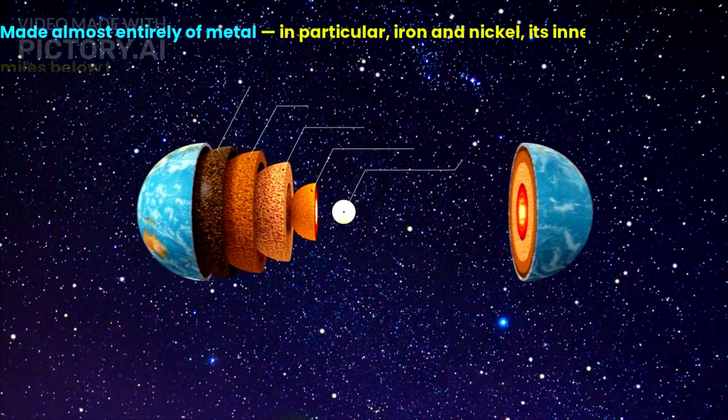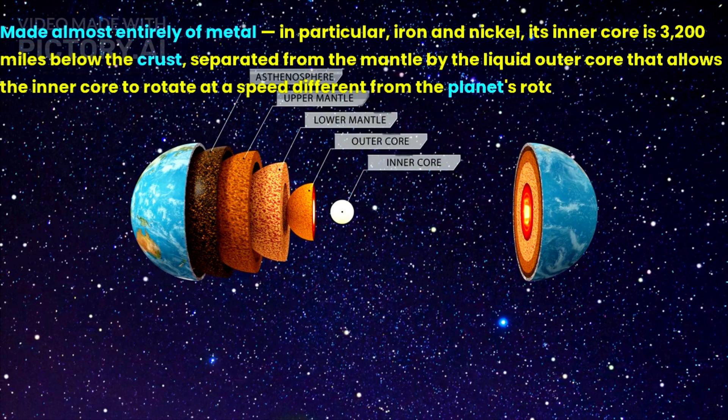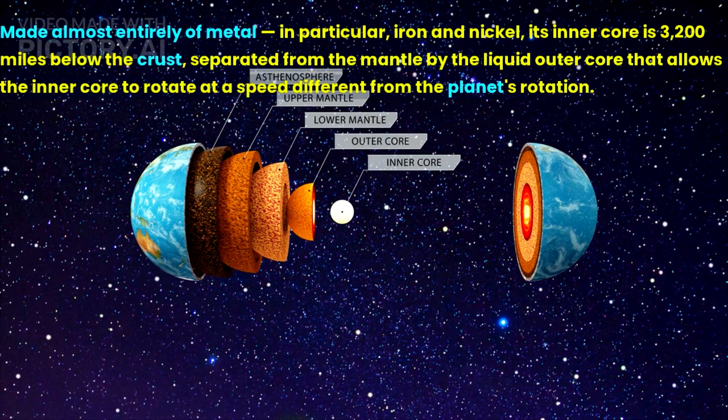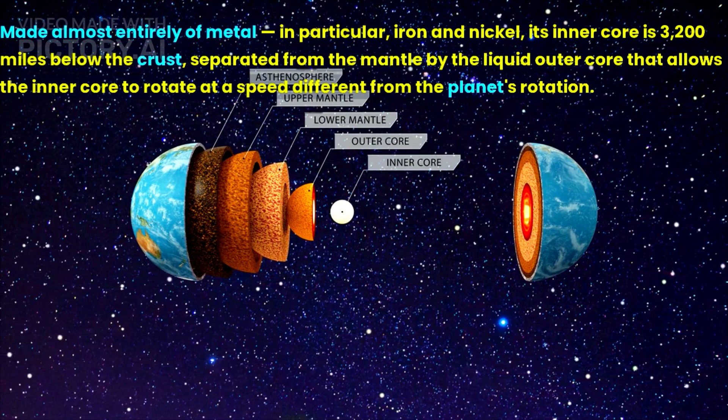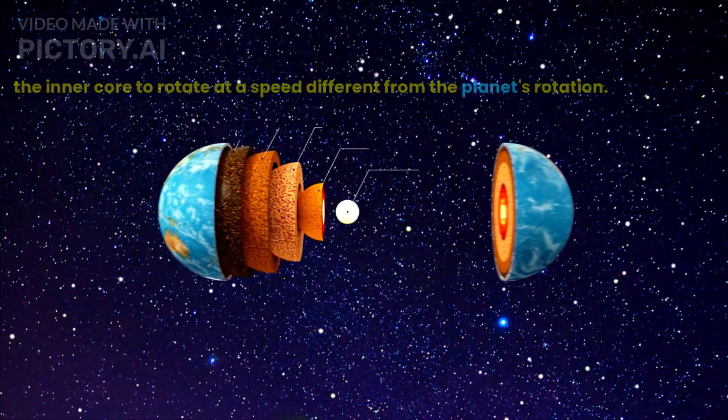Made almost entirely of metal, in particular iron and nickel, its inner core is 3,200 miles below the crust, separated from the mantle by the liquid outer core that allows the inner core to rotate at a speed different from the planet's rotation.